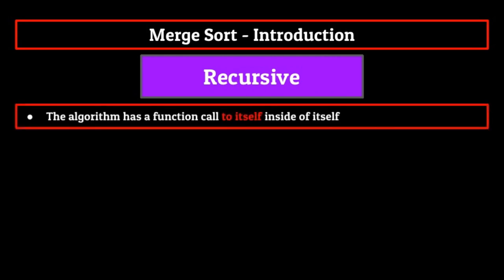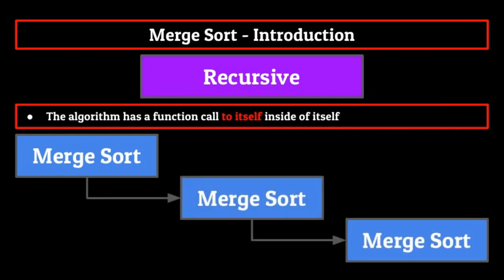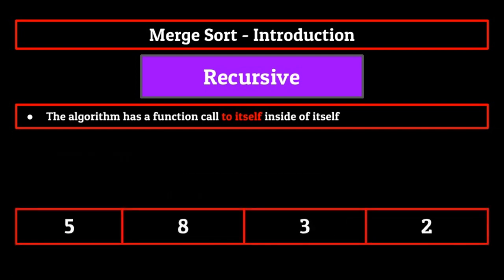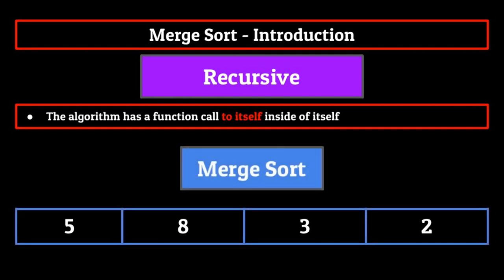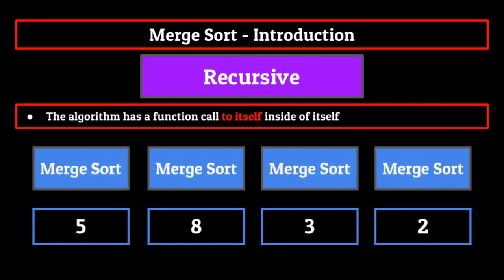Now when we state that the algorithm is recursive, we mean that the algorithm has a function called to itself inside of itself. Basically, inside the actual merge sort algorithm, we will be calling the merge sort algorithm again. We call merge sort on smaller and smaller portions of the list to help us sort. For example, in a list of four elements, we might call merge sort on the list, and inside that merge sort call, we might then call merge sort on both the left and right side of that list. And through those merge sort calls, we might call merge sort on the left and right sides of those sub-lists.